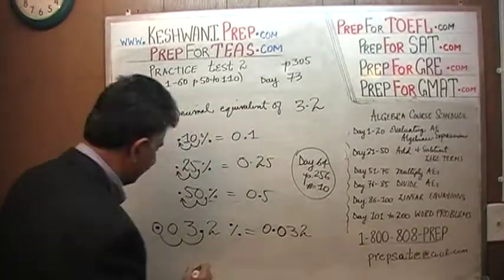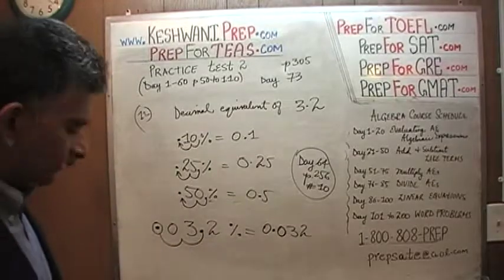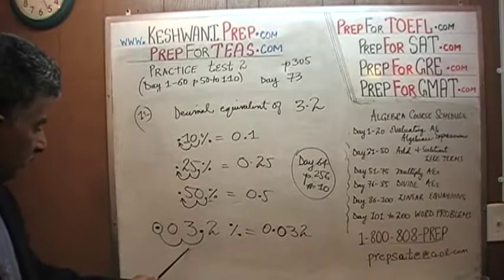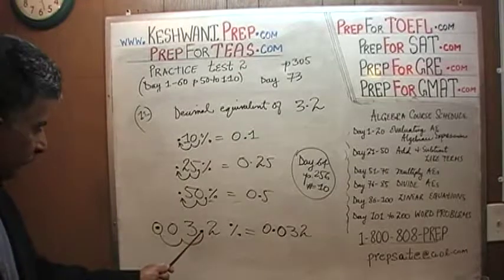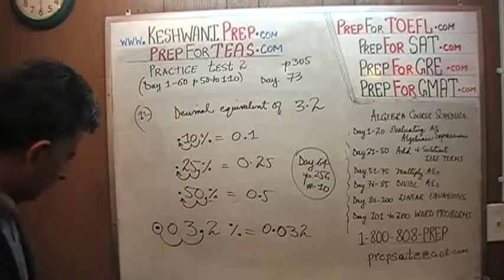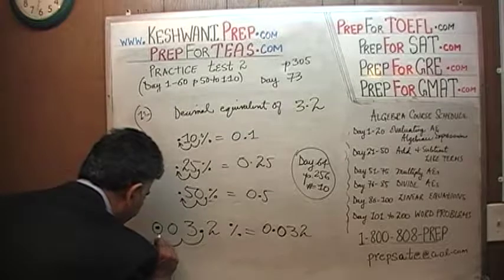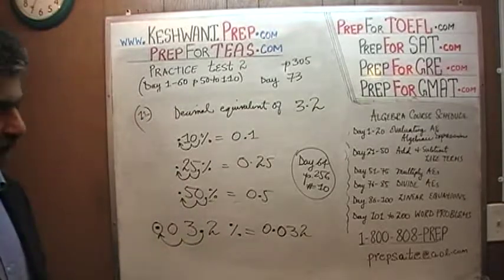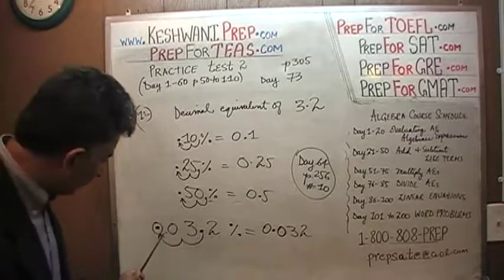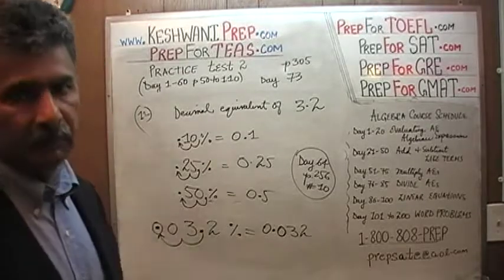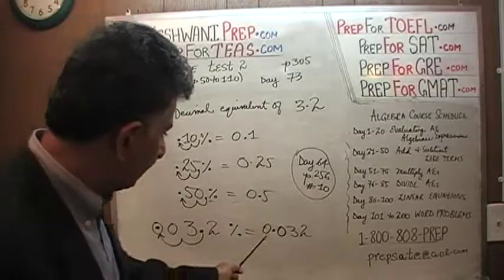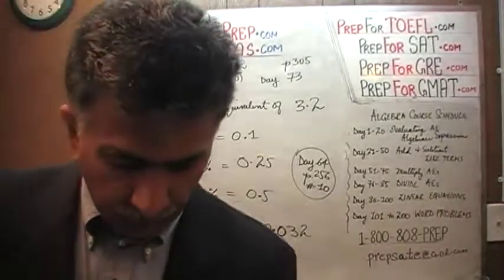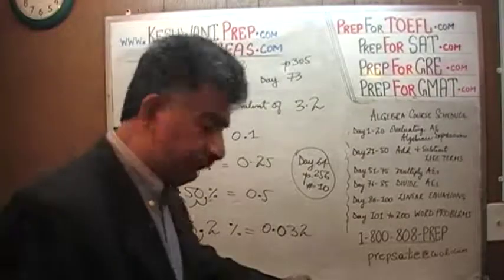There you go. 3.2%, after we move the decimal two places to the left, becomes 0.032 in decimal. That's all. I'll see you tomorrow. Bye now.